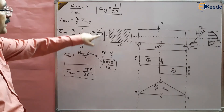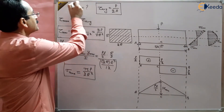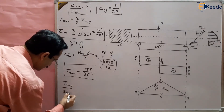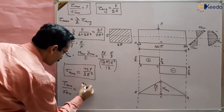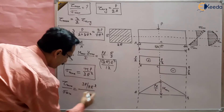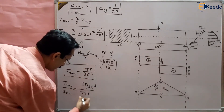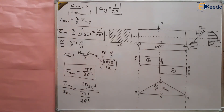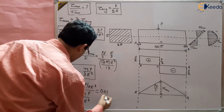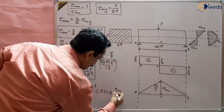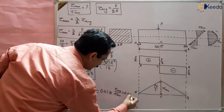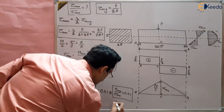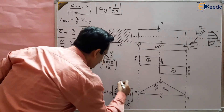So we have tau_max = 3P/(8h²) and sigma_max = 75P/(2h²). The ratio tau_max / sigma_max = [3P/(8h²)] / [75P/(2h²)]. P and h² cancel out, and solving the numerical values gives 0.01. So the ratio of maximum shear stress to maximum bending stress is 0.01, which is option D — this is the answer.